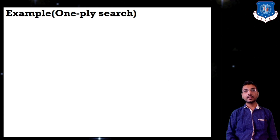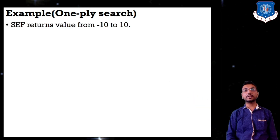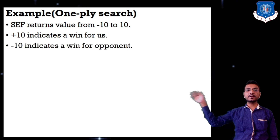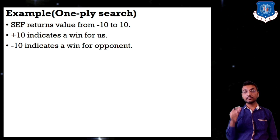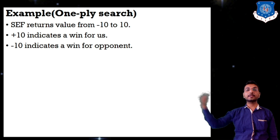For example, in a one-player search, the static evaluation function returns values from minus 10 to plus 10. Plus 10 indicates a win for us and minus 10 indicates a win for the opponent. For the maximum player at MAX we select plus 10, and for the minimum player at MIN we select minus 10.